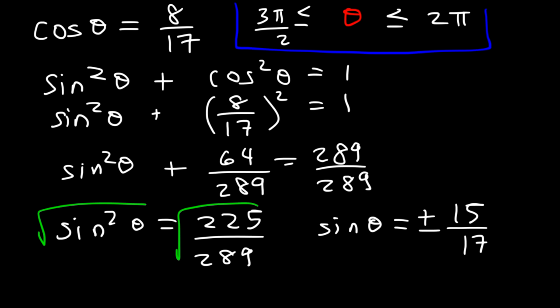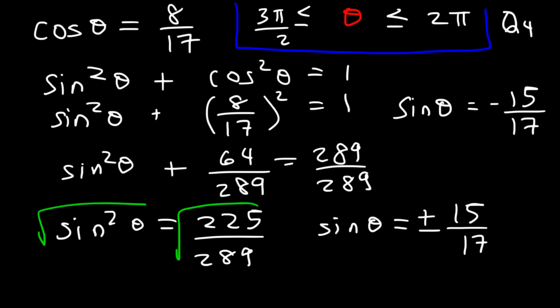So the angle is located in quadrant 4. In quadrant 4, sine is negative but cosine is positive. Sine squared equals 289 minus 64 over 289, which is 225 over 289. Taking the square root, the square root of 225 is 15 and the square root of 289 is 17. Since sine is negative in quadrant 4, sine theta equals negative 15 over 17.